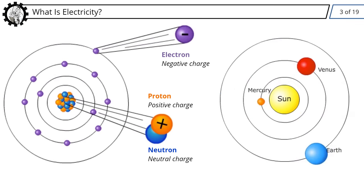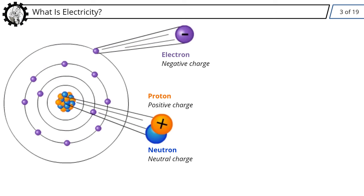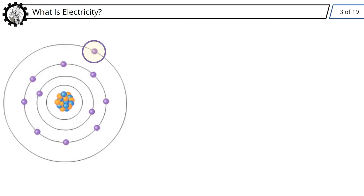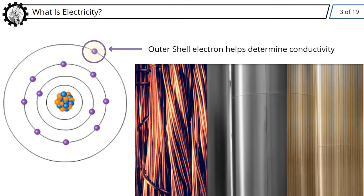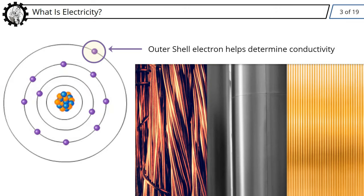Electrons move when we apply a force. Some materials move or conduct electrons more easily than others, because the electrons in their outer shell aren't bound as tightly to the atom. Some of the most conductive materials, like copper, silver, and gold, are commonly found as part of the welding circuit.